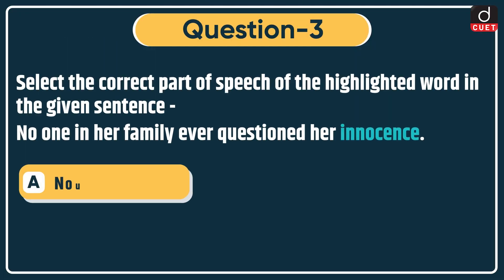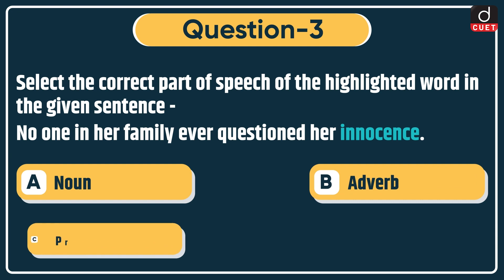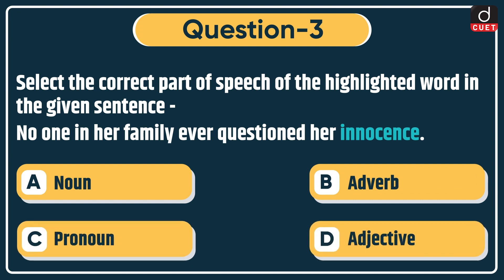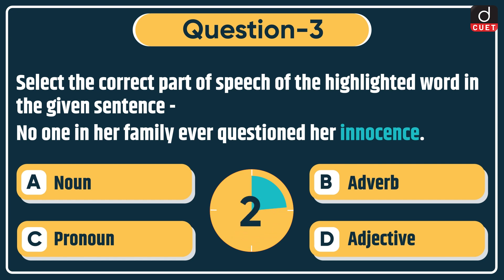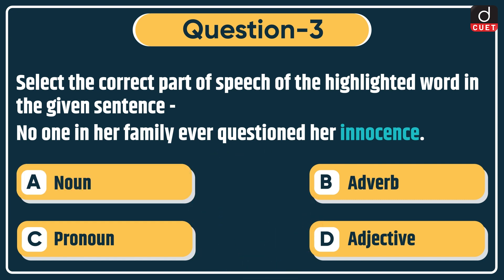Next question: select the correct part of speech of the highlighted word in the given sentence. 'No one in her family ever questioned her innocence.' The highlighted word is innocence. Options: noun, adverb, pronoun, or adjective. The correct answer is option A, noun.